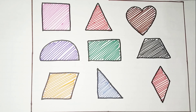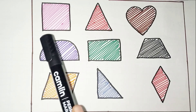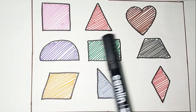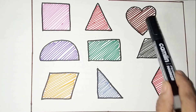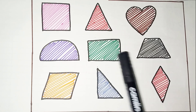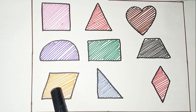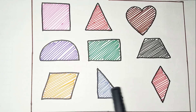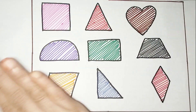Red color Square, Triangle, Heart. Semicircle, Rectangle, Trapezoid, Parallelogram, Right angle, Rhombus. Bye!